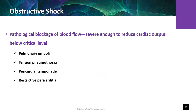Disease conditions that reduce cardiac filling or obstruct blood flow can acutely and critically reduce cardiac output and blood pressure, resulting in obstructive shock. This includes severe restrictive pericarditis and pericardial tamponade that restrict cardiac filling. Impairment of lung blood flow can also produce obstructive shock, as caused by pulmonary emboli or tension pneumothorax.